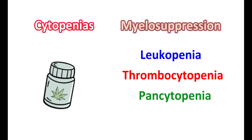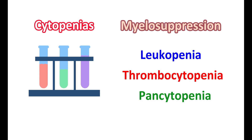The complete blood count should be checked every week during the first month, then every two weeks in the second and third months. On further treatment, a monthly assessment of blood count should be done to check for any development of leukopenia.